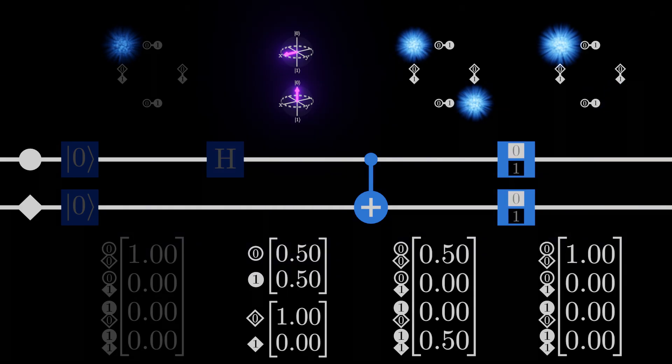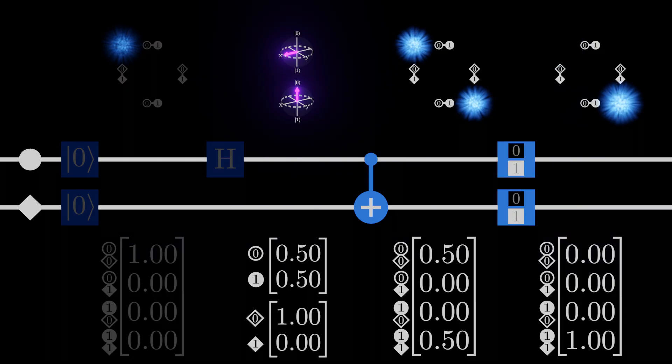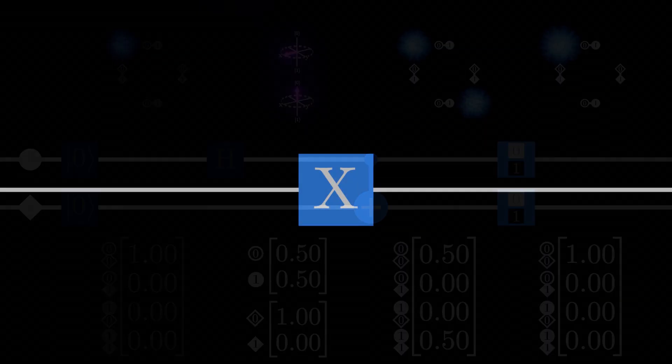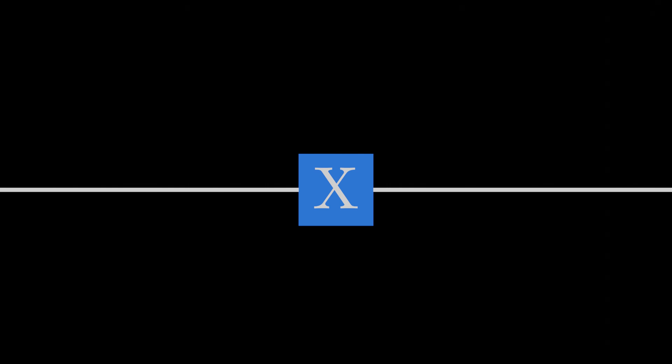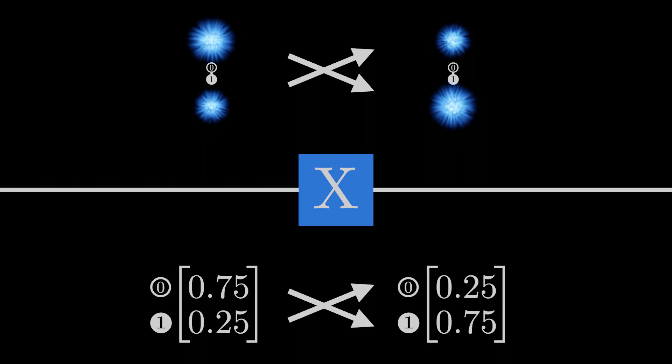Now that we have a description of this multi-qubit gate, what happens if we use one of our single qubit gates from last time? To start, we'll look at the not gate, which, with our current model, swaps the probabilities of a qubit being measured as zero or one.